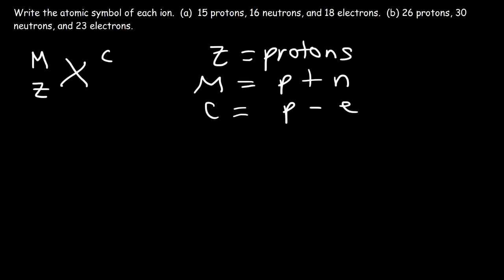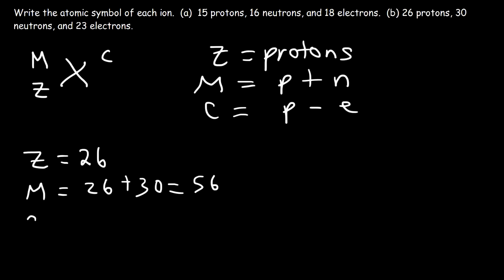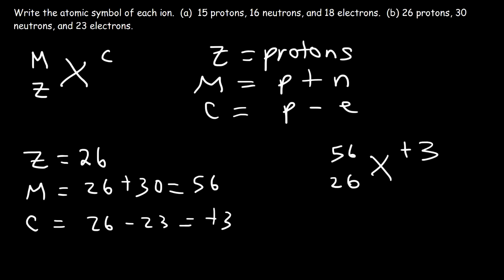For part B, the number of protons is 26. The mass number is 26 + 30 = 56. The charge is 26 minus 23 = +3. Because there are more protons than electrons, we have a positively charged cation. With atomic number 26, mass number 56, and charge of +3, we look up the element on the periodic table — atomic number 26 is Fe, iron. So this is the ionic symbol for iron: ⁵⁶₂₆Fe³⁺.